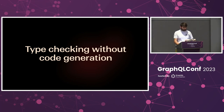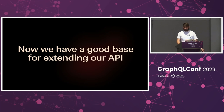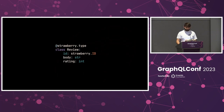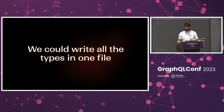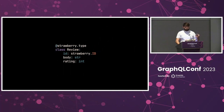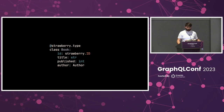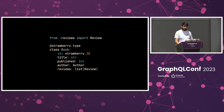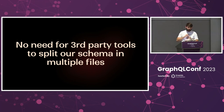Now let's add a Review type. Before using it, we need to decide where to put it. We could write everything in one file like Schema First, but that doesn't scale. Instead, we can leverage Python's module system to have different modules for different concerns. We write the Review type in a reviews.py file, then import it in our books schema. We don't need third-party tools to split our schema into multiple files — it's just a benefit of using a real programming language.